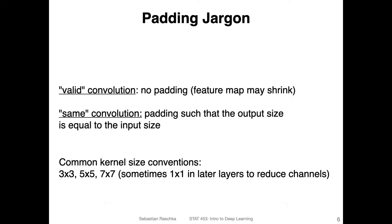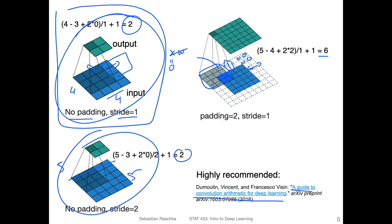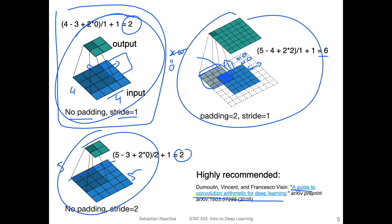The other term is same convolution, which means we choose a padding such that the input and output sizes are the same. Note it's not always possible — for example, with a four-by-four kernel, even adding one row of padding won't achieve the same input size. This is partly why common kernel size conventions are three-by-three, five-by-five, and seven-by-seven: they allow for a valid same convolution.